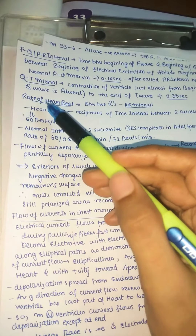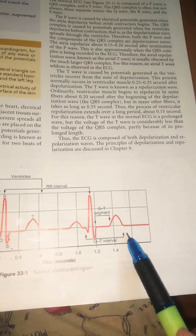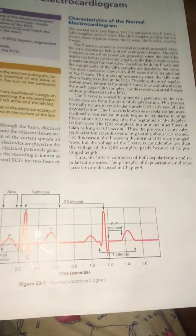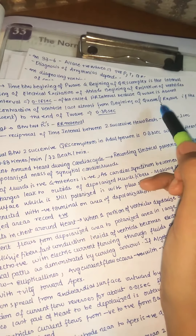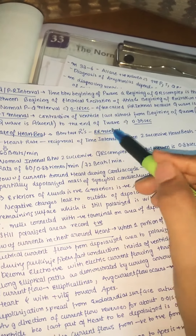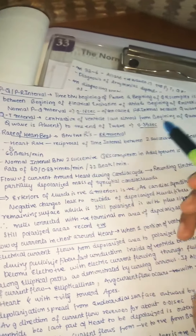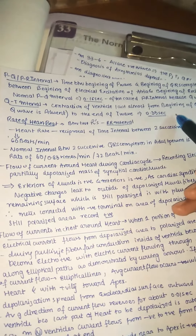The QT interval covers from the beginning of the QRS complex to the end of the T wave. It represents the contraction of the ventricle, lasting from the beginning of the Q wave (or R wave, if Q is absent) to the end of the T wave. The QT interval is approximately 0.35 seconds.